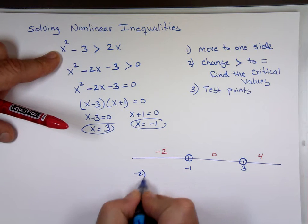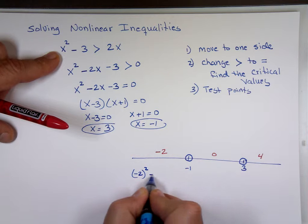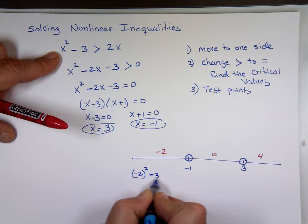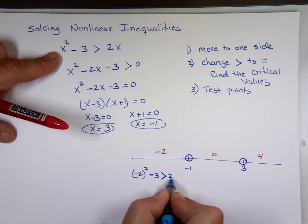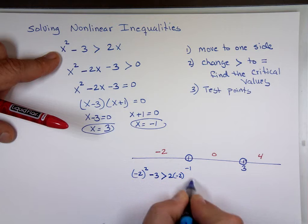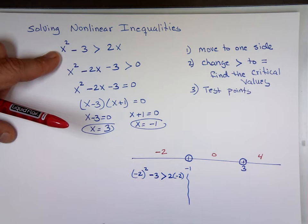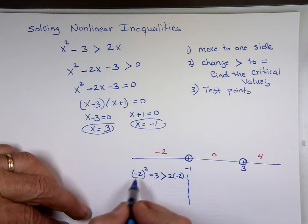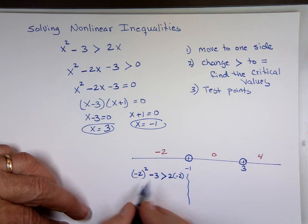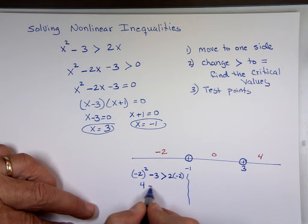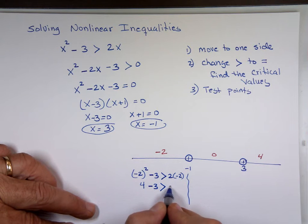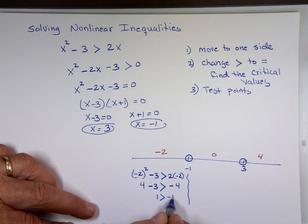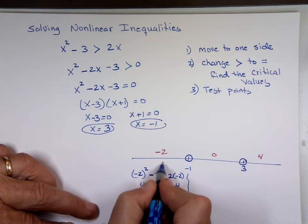Let's plug in x = -2. Is (-2)² - 3 bigger than 2 times (-2)? That's 4 - 3 = 1, and 2(-2) = -4. Is 1 bigger than -4? Yes — this region is a solution.